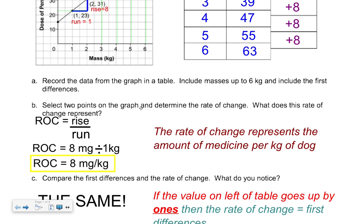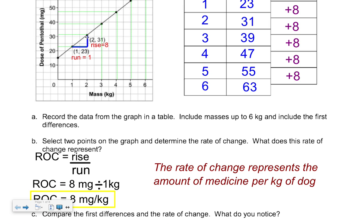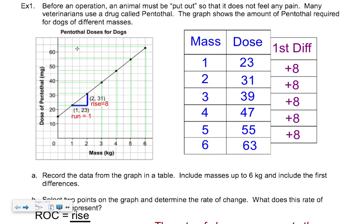Part B says: select two points on the graph and determine the rate of change — what does the rate of change represent? I chose these two points, so here's my little right-angle triangle. The run is pretty easy because it starts here at 1 and ends at 2, so from 1 to 2 is a step of 1. On the rise part, it's starting at 23 — that's where my cursor is going across — and it ends up at 31. So as you go from 23 to 31, you're going up by 8.